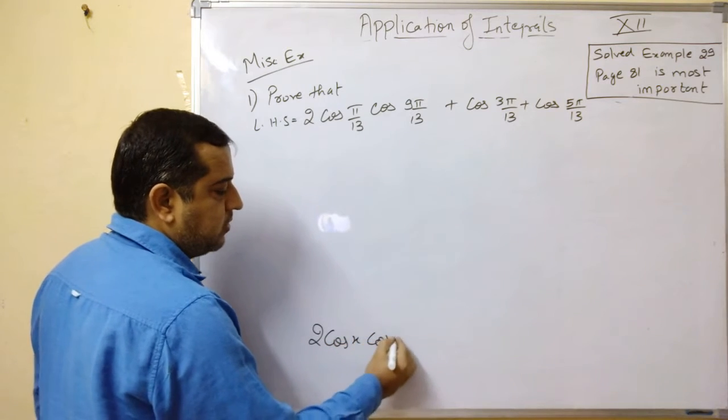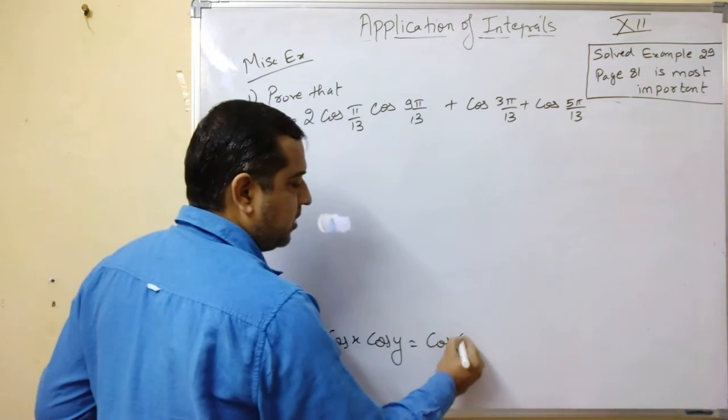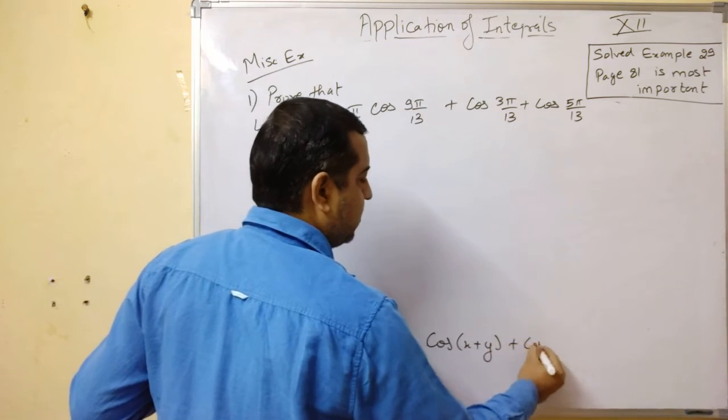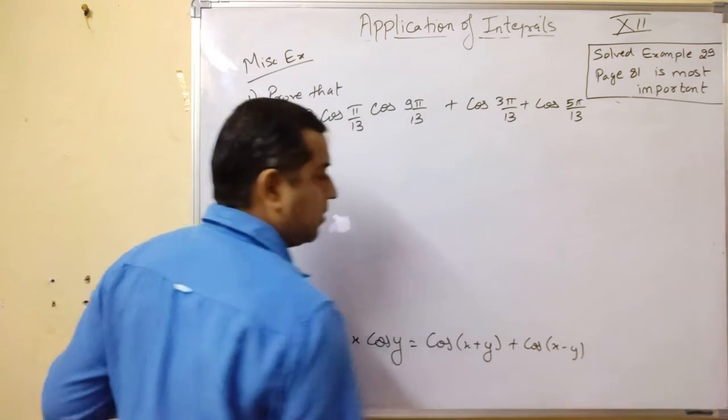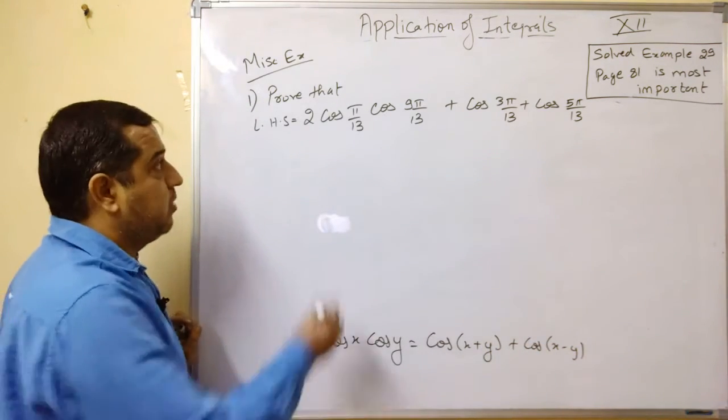2 cos x cos y equals cos(x+y) plus cos(x-y). So we will apply this formula here.